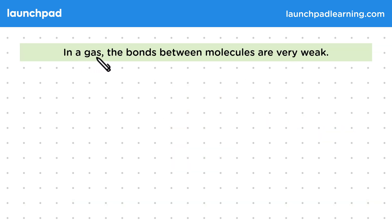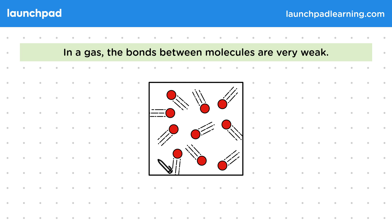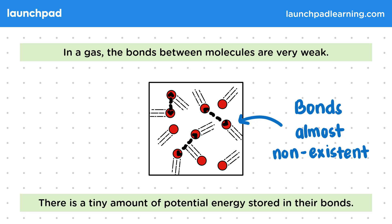And finally, in a gas, the bonds between molecules are very weak. Remember that gas molecules move freely and independently. This is because of how weak the bonds between them are. In fact, they are almost non-existent and they don't really restrict the motion of the molecules. This means there is a tiny amount of potential energy stored in their bonds.